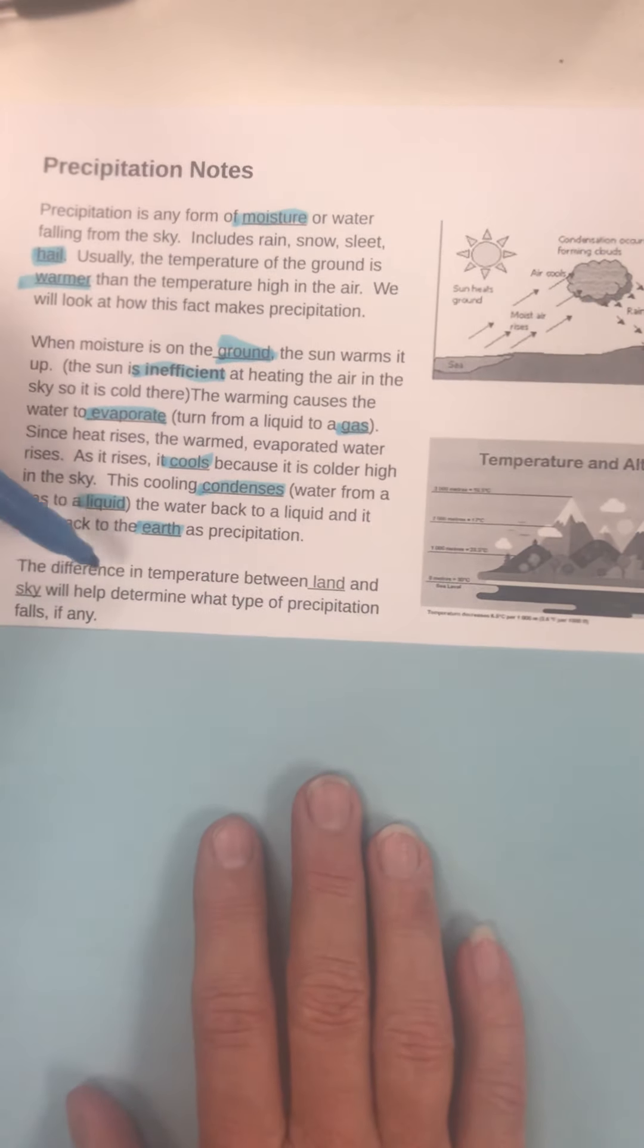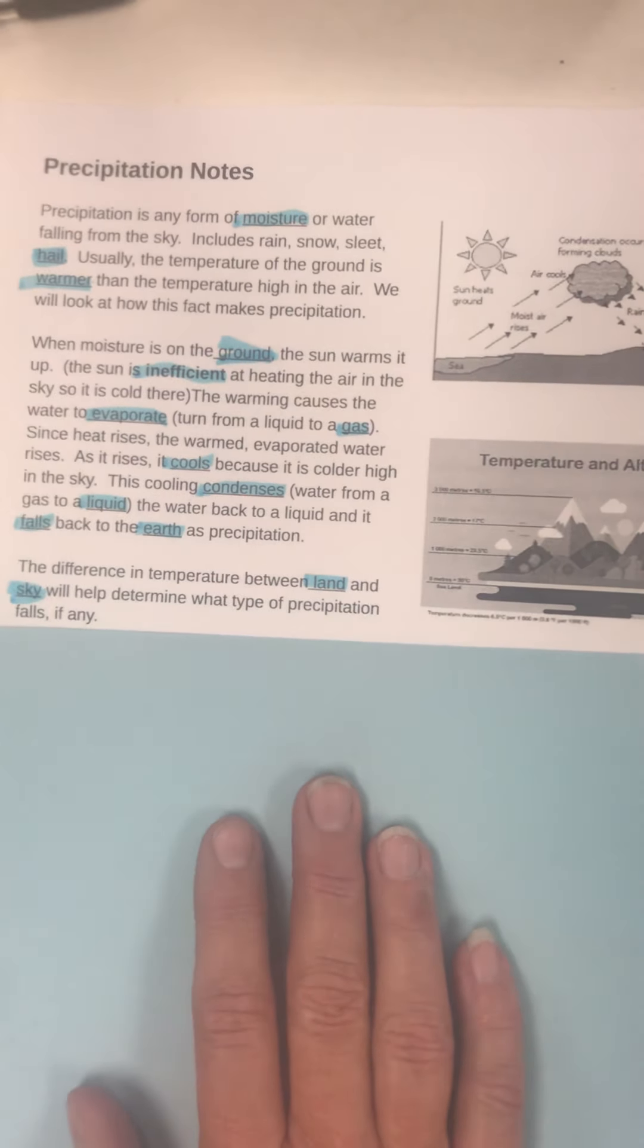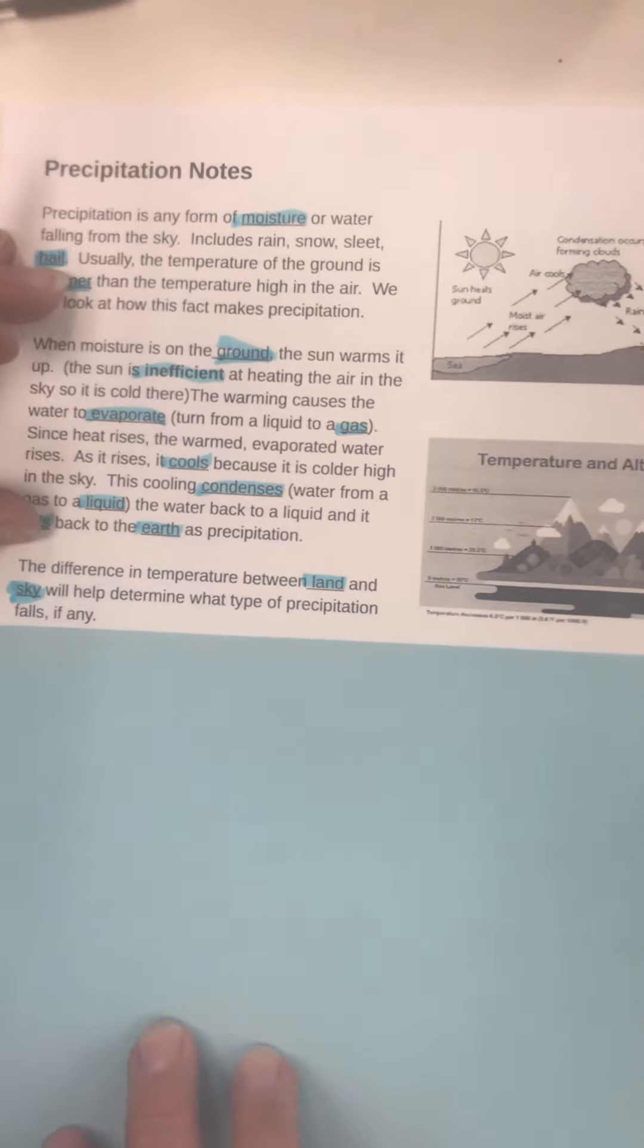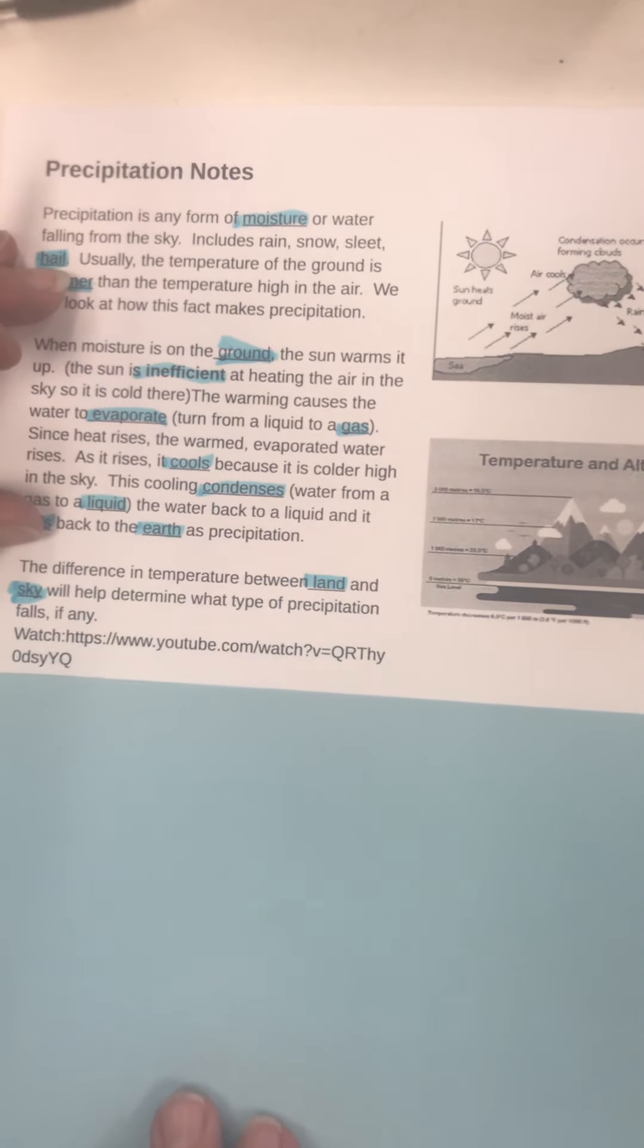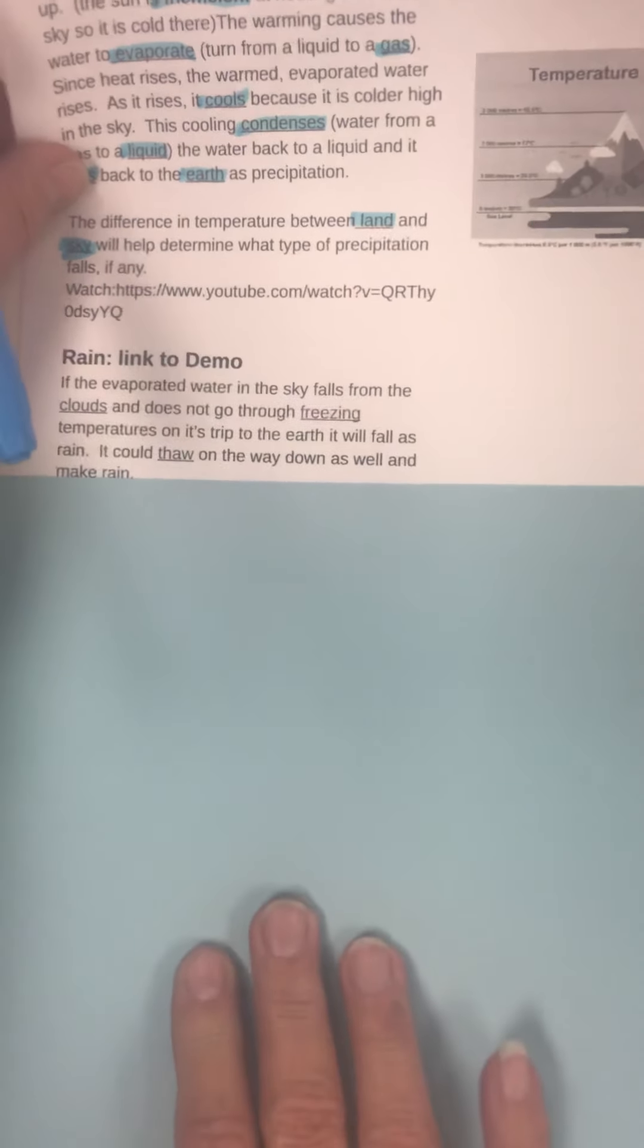The difference in temperature between land and sky will help determine what type of precipitation falls, if any. And there's a YouTube video. This link is on Canvas.